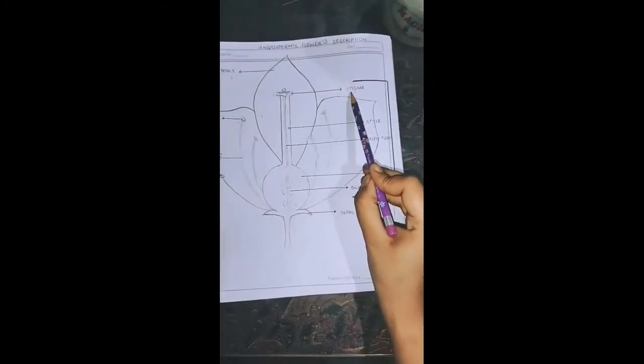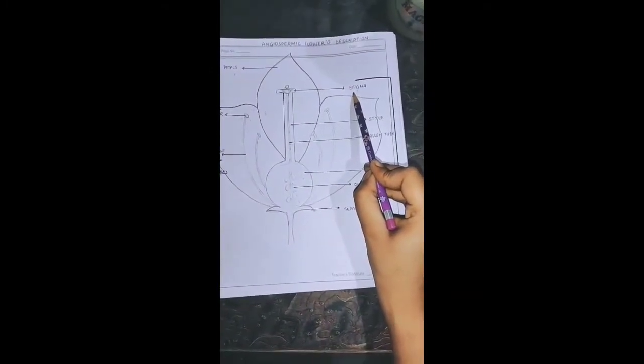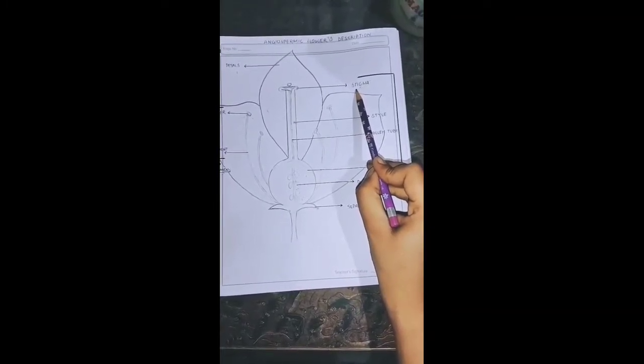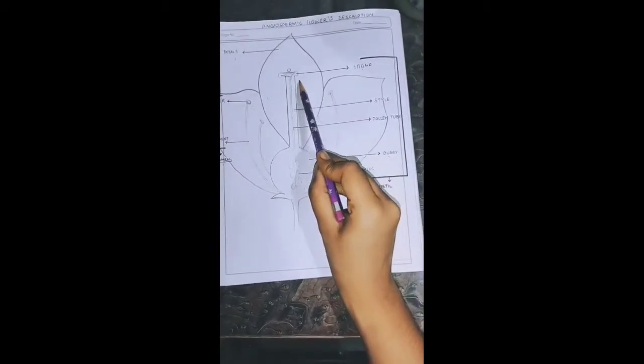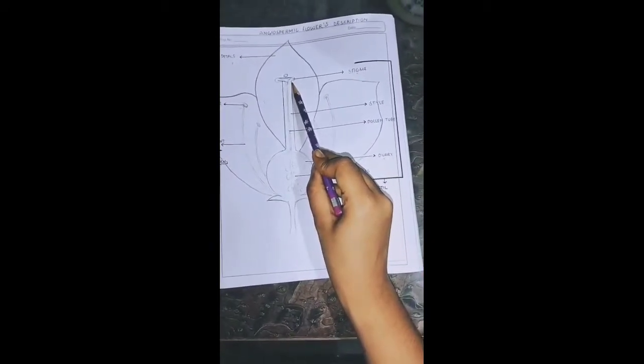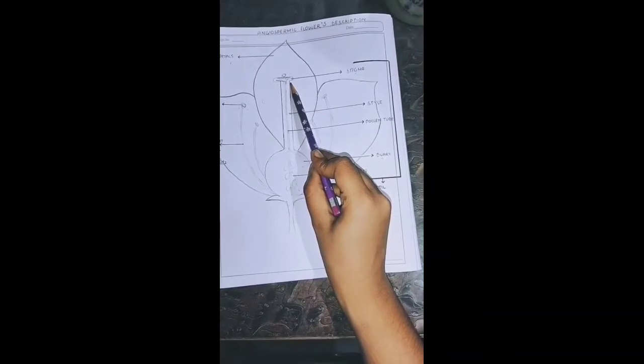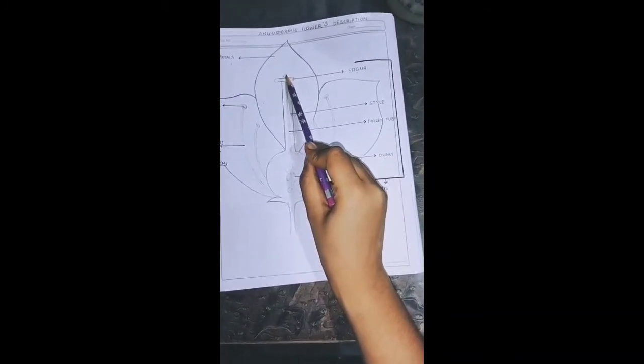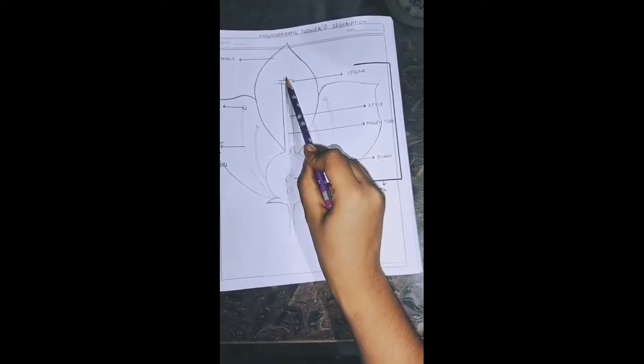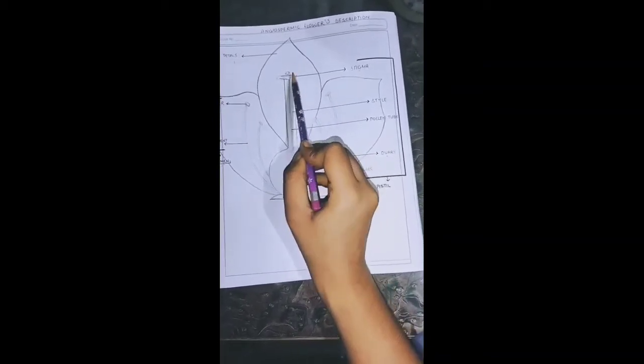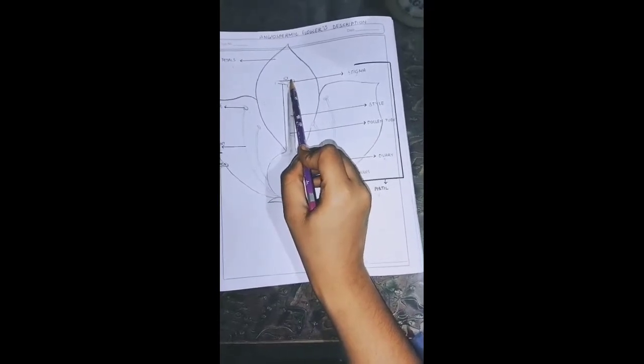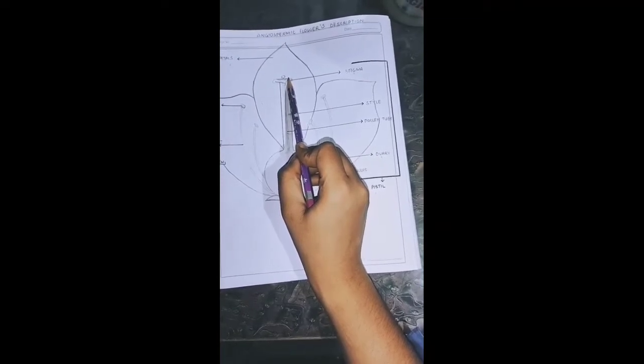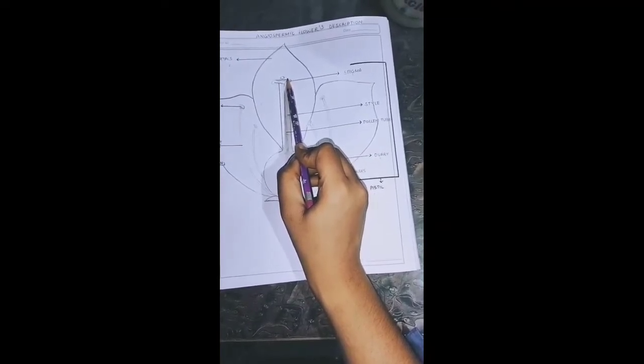So here are some subunits of the female reproductive system. First is our stigma. Stigma is the upper part of the female reproductive system which after pollination pollen grains stick to. The pollen grains stick because on the upper surface of the stigma there is a very sticky substance which makes pollen grains stick.